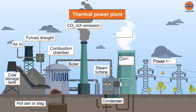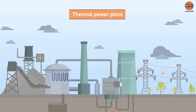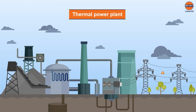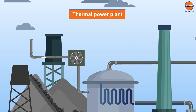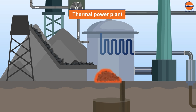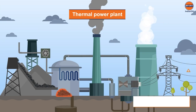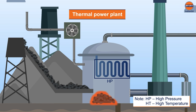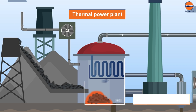Let's see how electricity is generated in thermal power plants using steam turbines. The main operation begins when coal dust is sprayed into the combustion chamber and air is supplied through a forced draft. The ash is collected at the bottom and carbon dioxide emissions are sent out through a tower. A boiler with high pressure water is located in the combustion chamber, and due to the high temperature, the water converts into steam and enters the turbine.